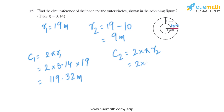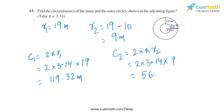The circumference of the inner circle is 2πR2, where pi is 3.14 and R2 is 9 meters. Solving this, the circumference of the inner circle is 56.52 meters.